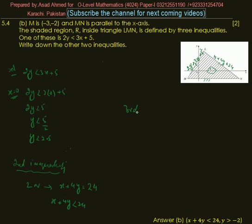For the third inequality, we need to find the equation of this line. The coordinate of M is given as (-3, -2), meaning it cuts the y-axis at -2. So the equation of this line becomes y = -2, since the line is horizontal and parallel to the x-axis.